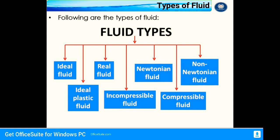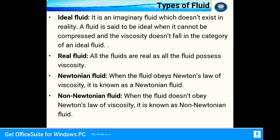Next is types of fluid. Fluids have six to seven subtypes: ideal fluid, real fluid, ideal plastic fluid, compressible fluid, incompressible fluid, Newtonian fluid, and non-Newtonian fluid. The ideal fluid is an imaginary fluid that does not exist in reality; it cannot be compressed and viscosity does not apply to it. All real fluids possess viscosity. Newtonian fluids obey Newton's law of viscosity, while non-Newtonian fluids do not obey Newton's law of viscosity.